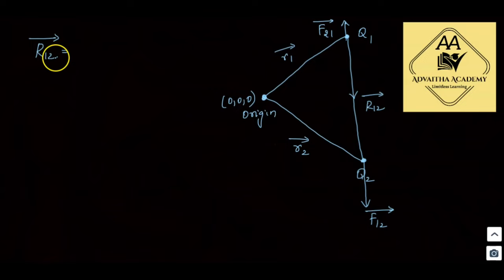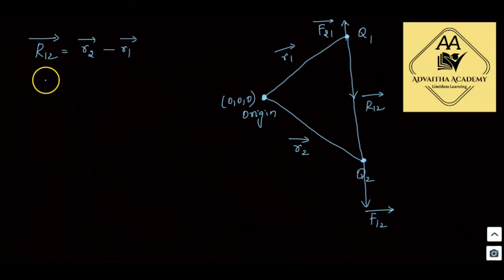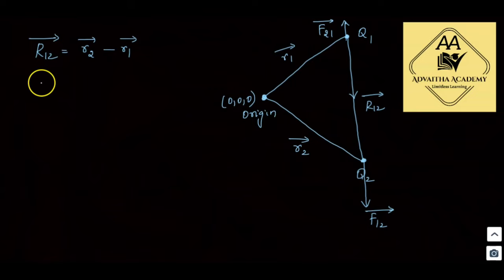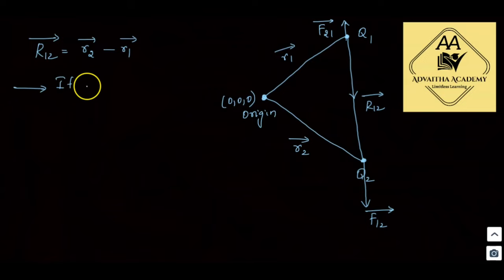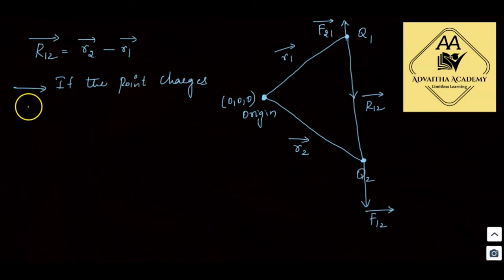So r12-bar = r2-bar − r1-bar (final point minus initial point). Similarly, r21-bar = r1-bar − r2-bar. If the point charges q1 and q2 are located at position vectors r1-bar and r2-bar from the origin respectively, then the force on q2 due to q1 is F12.